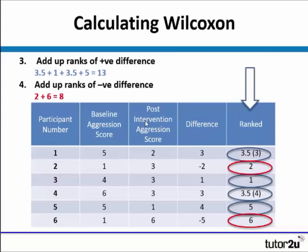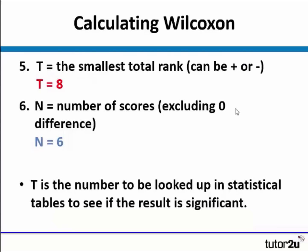Next, we add up the ranks of the positive differences, which are circled in blue: 3.5, 1, 3.5, and 5, which adds up to 13. Then we add up the ranks of the negative differences, which is 2 and 6, giving us 8. The value of T is the smallest of the total ranks, so T equals 8.